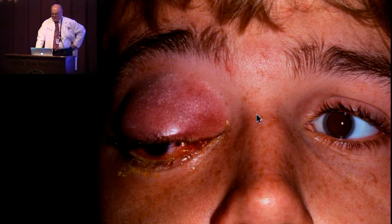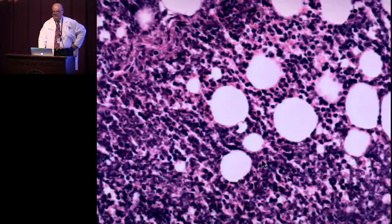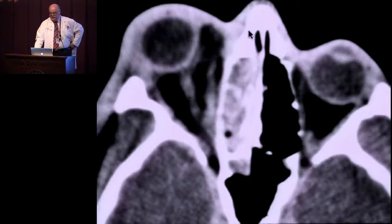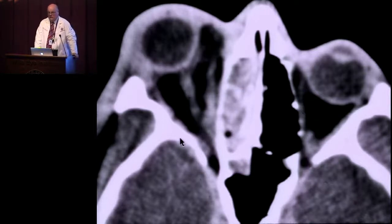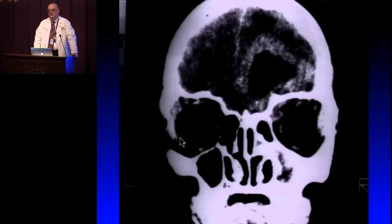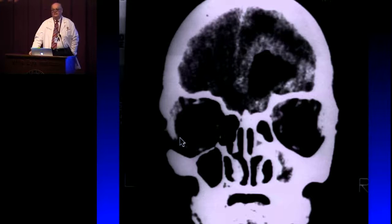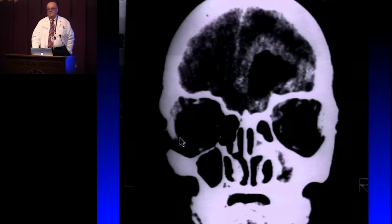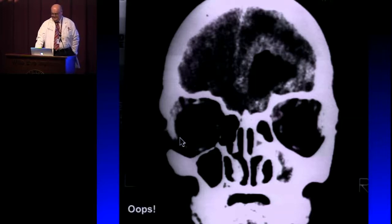Here is an example of orbital cellulitis, with histology showing an infiltrate of polymorphonuclear leukocytes with tissue necrosis. Orbital cellulitis typically starts in the paranasal sinuses and then invades the orbital tissues secondarily. This is something you want to avoid — a brain abscess and necrotizing fasciitis from untreated cellulitis.